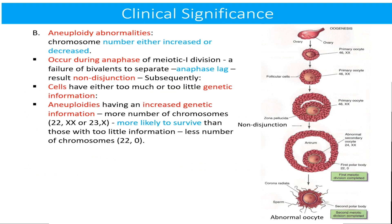The second group of errors is aneuploidy abnormalities, in which chromosome number is either increased or decreased. This type of abnormality occurs during anaphase of the first meiotic division in the shape of a failure of bivalents to separate, named anaphase lag or non-disjunction. Subsequently, cells have either too much or too little genetic information. Aneuploids having increased genetic information, that is more chromosomes, are more likely to survive than those with too little genetic information, that is fewer chromosomes.